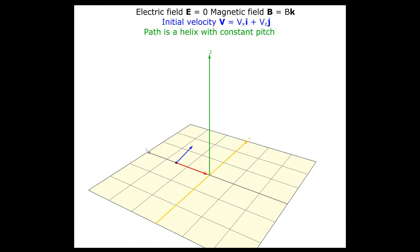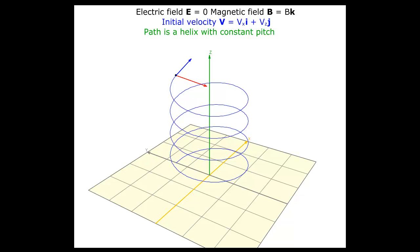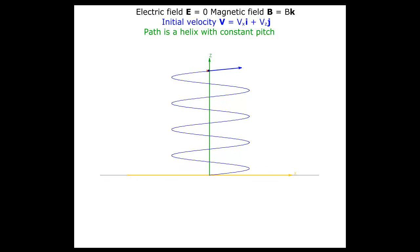The initial velocity has x and z components, and the magnetic field is in the z-direction. Because of the component of velocity parallel to the magnetic field, the charged particle has a motion component parallel to the z-axis in addition to going around a circular path. This path is a helix with constant pitch. The projection of the path in the x-z plane is a sine curve. The z-component of velocity is constant, and the distances traveled parallel to the z-axis in each revolution are equal, resulting in a helix with constant pitch.